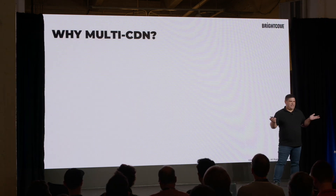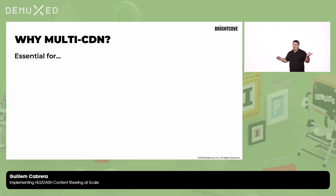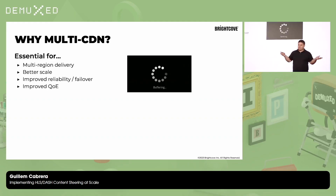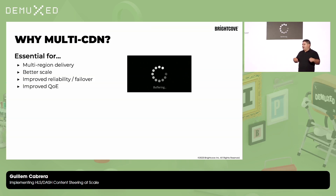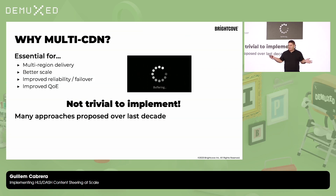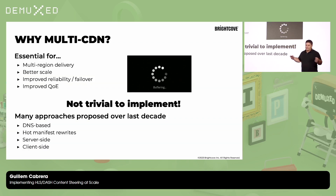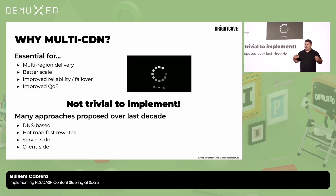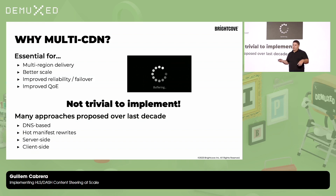Why do we need multi-CDN for video delivery? It is essential for multi-region delivery, better scale, improved reliability, and failover in case of disasters, and improved QoE. But this is not trivial to implement. Over the last decade, we had seen many approaches based on many different solutions — CDN, manifest rewrite, server-side, client-side — but none of them really succeeded, and none of them became a standard, not even a de facto one.